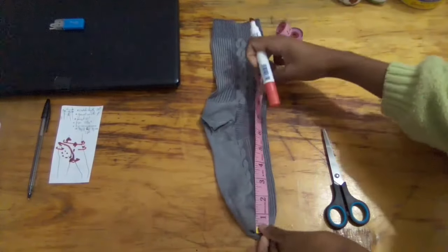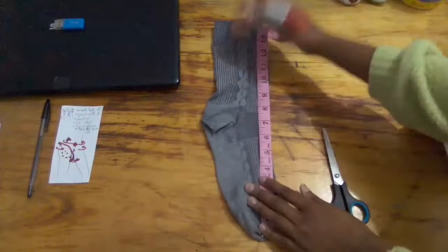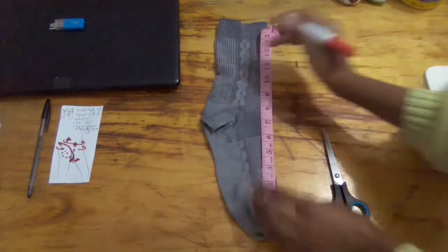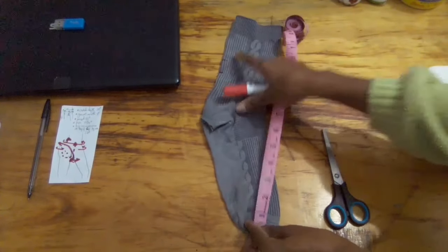My crotch depth was about 20 inches, so I'm marking 10 inches from the tip of the sock on both sides.